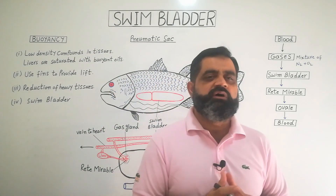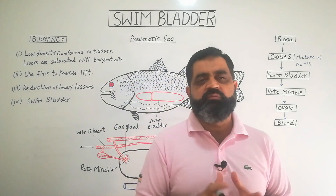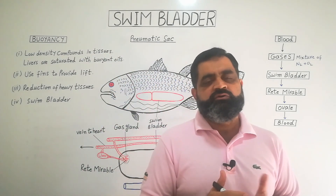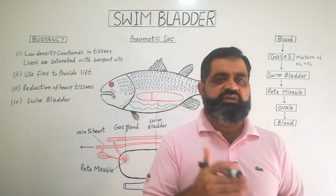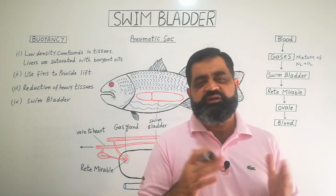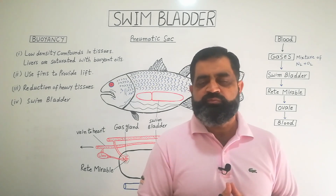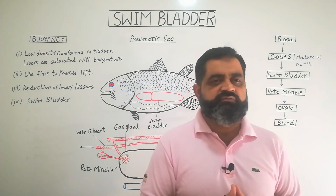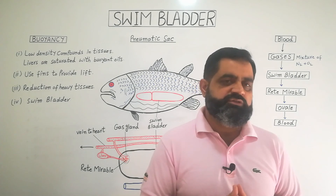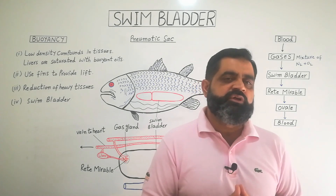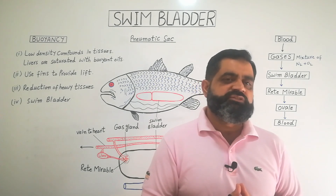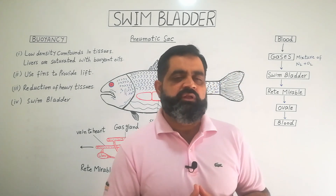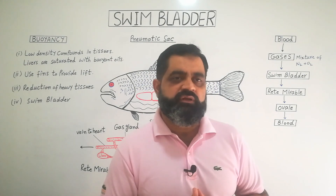In this way, the swim bladder — also known as the pneumatic sac — helps the fish with buoyancy, to float or sink in the water without the expenditure of too much energy. I hope you have understood this topic today. We will see you in the next lecture. Bye!